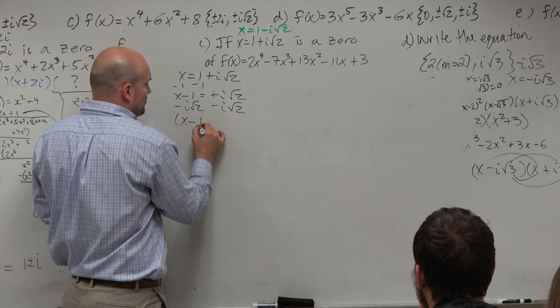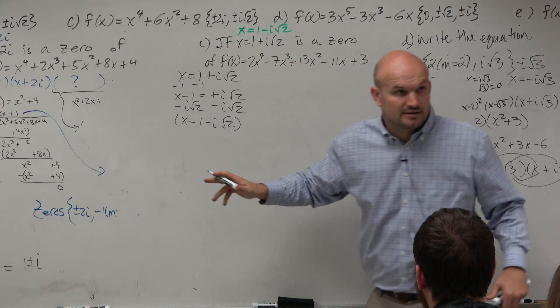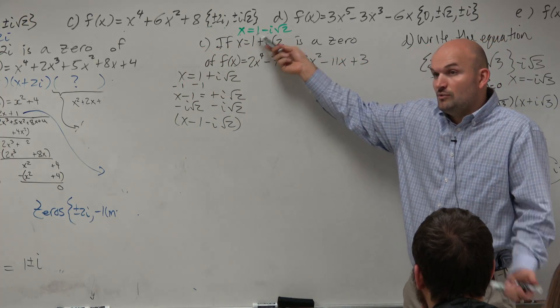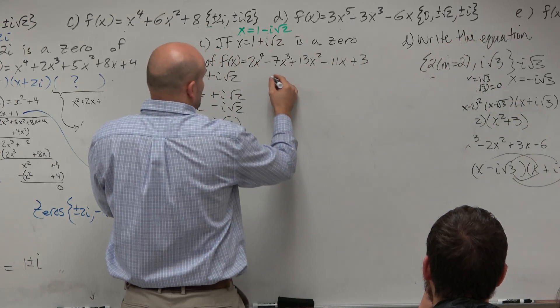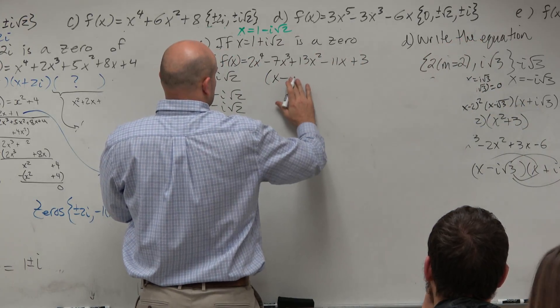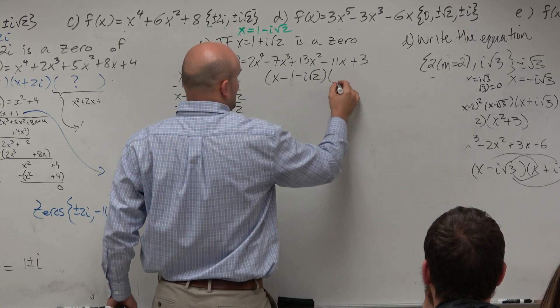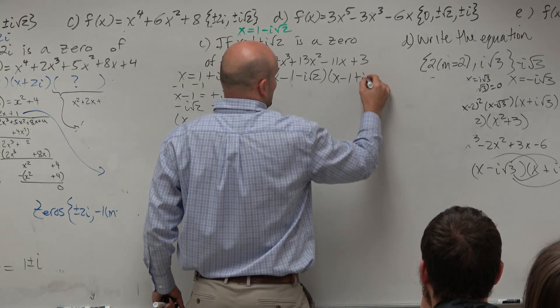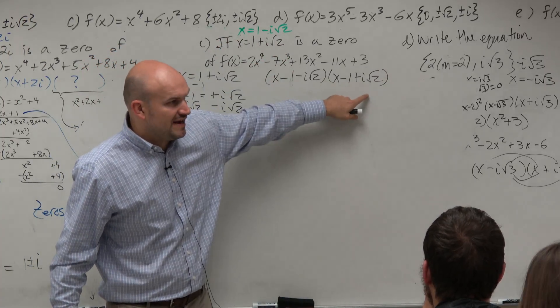So therefore, I have x minus 1 minus i square root of 2 as one factor. And therefore, if we have the other zero, we can figure out the other factor. So therefore, we have x minus 1 minus i square root of 2 is one factor, times x minus 1 plus i square root of 2 is the other factor. So if you were to solve this one for zero, you'd get these two factors.